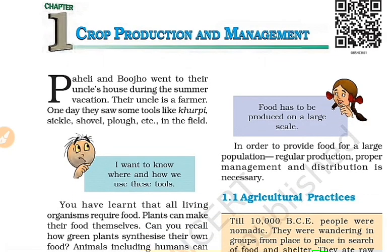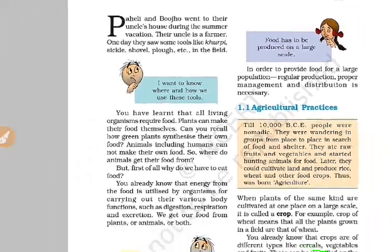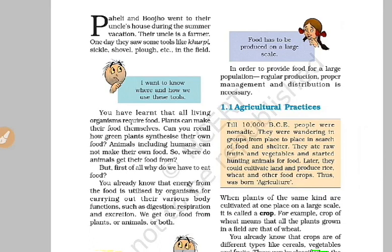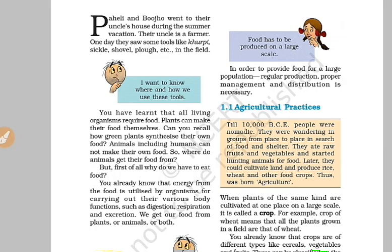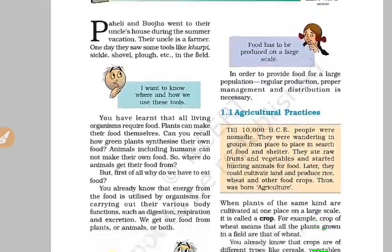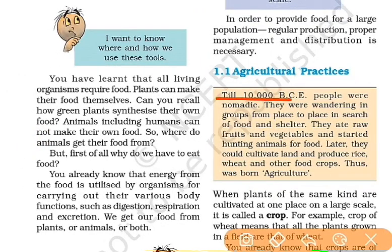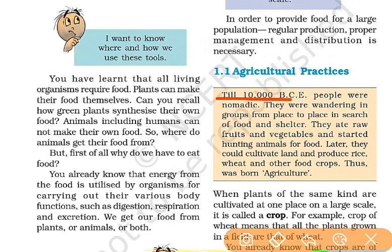This is a very simple unit. So we have the first type of crop production. What we call a crop is a long-term crop. The next topic is agricultural practices — how we manage crops, including nomadic crops.